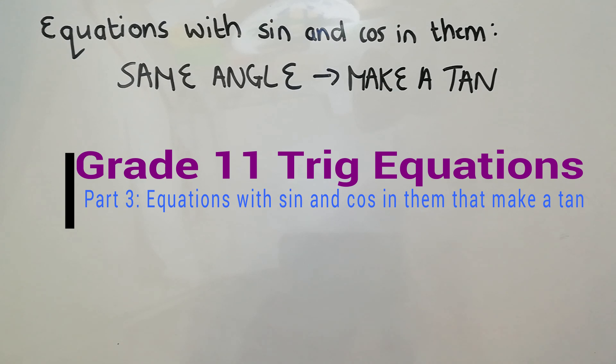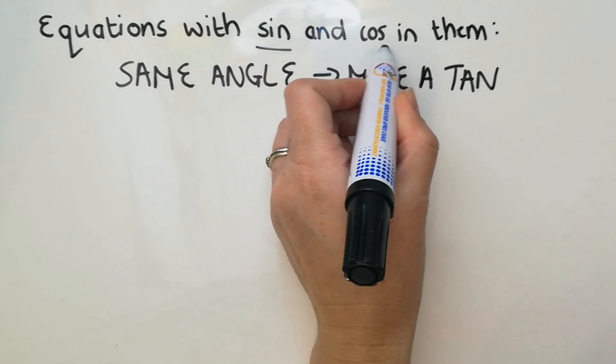There are two main types of trig equations that have a sine function and a cos function in them.